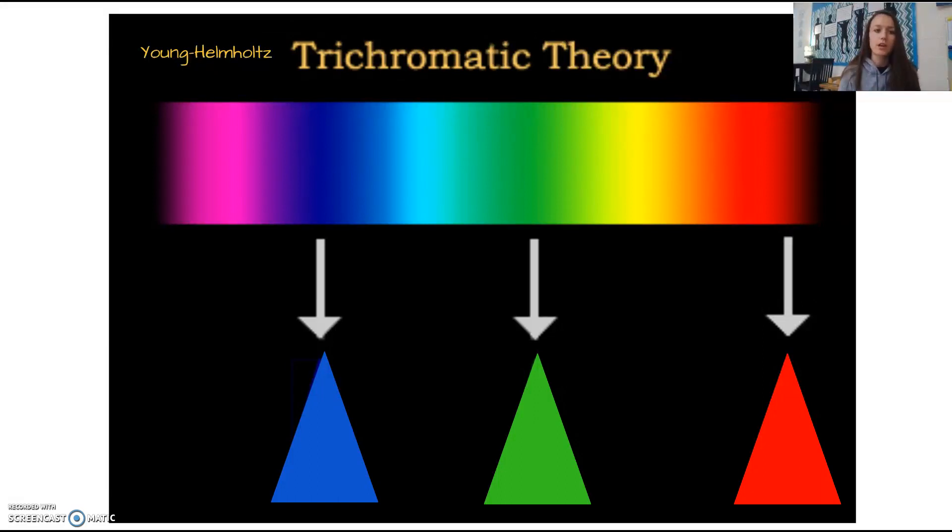We're going to start with the Young-Helmholtz trichromatic theory of color. This theory is that you have three cones, three photoreceptors, and these three cones are seeing three different colors. Those three colors are red, green, and blue. You can see the three cones on this image. And all other colors we see are just shades of that red, green, or blue. That's the colors that we pick up according to the trichromatic theory of color.